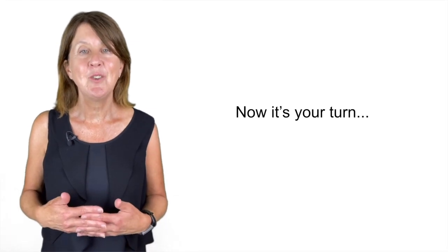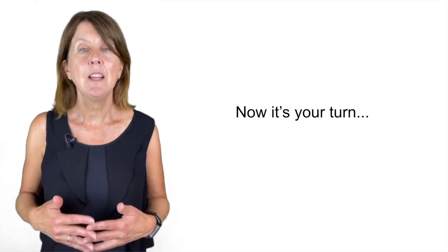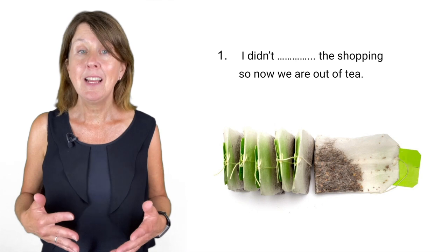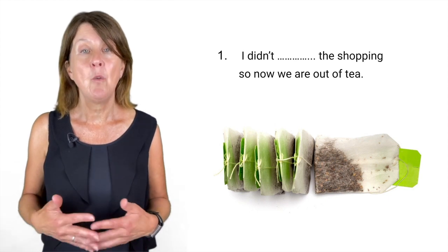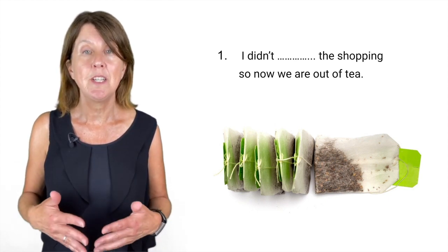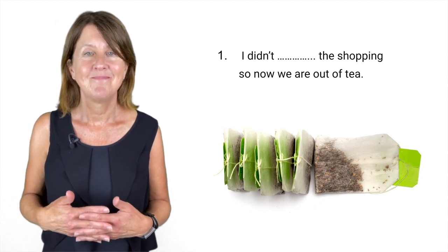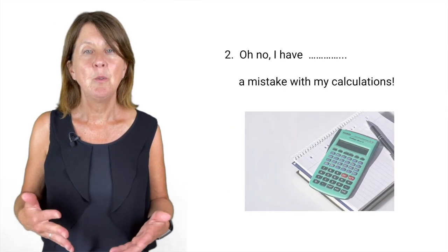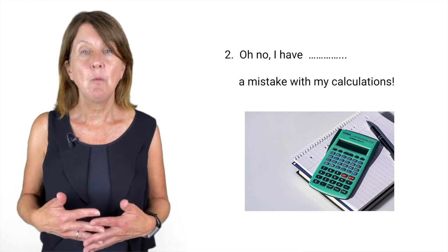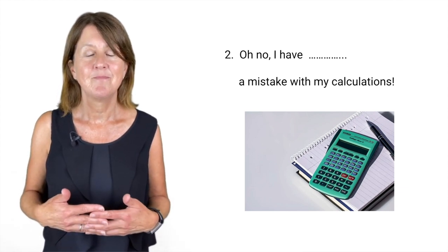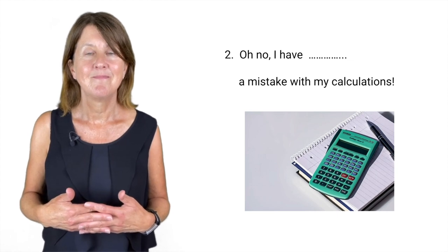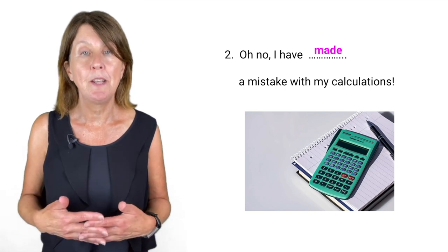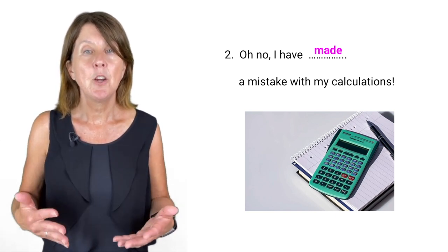So now it's your turn. Fill in the gaps with the correct form of make or do. Number one: I didn't blank the shopping, so now we are out of tea. We have no more tea. Do. Remember we use do for an action. Two: Oh no! I've blank a mistake with my calculations. Made. This is the outcome of not doing the calculations properly, so it's make.